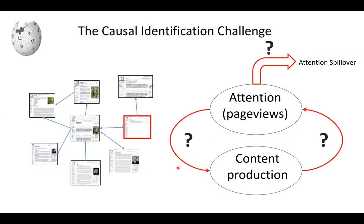Much research focuses on Wikipedia editors — their motivations and activity — but we take a different perspective and focus on the articles instead. In a complex sociotechnical system like Wikipedia, articles are not independent; they are interconnected via hyperlinks. For a given article, we want to know how attention (measured by page views) drives content production, and vice versa — how more content may attract more attention. We also ask whether attention spills over onto other connected articles in the Wikipedia network.